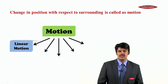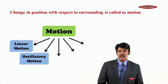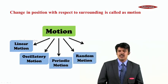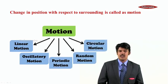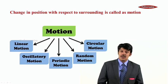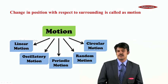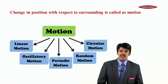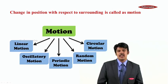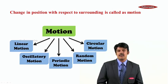The first type of motion is called linear motion. The second type is called oscillatory motion. The third is periodic motion. The fourth is random motion. And the last one is called circular motion. You must have heard about these different types of motion, and I am very sure you must have seen these types of motion happening around you in your daily life. So let us correlate and understand what these different types of motion are.